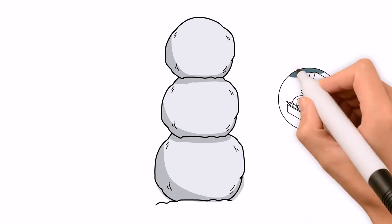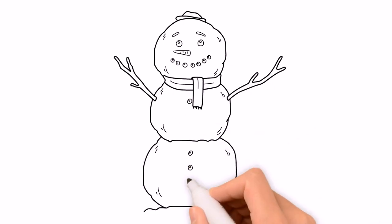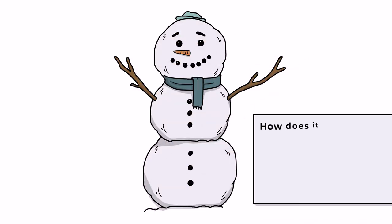Say I had a box with a scarf, a top hat, a carrot, some pieces of coal, and some twigs in it. If we added all of that to the snowman in the next iteration, how does it look now?